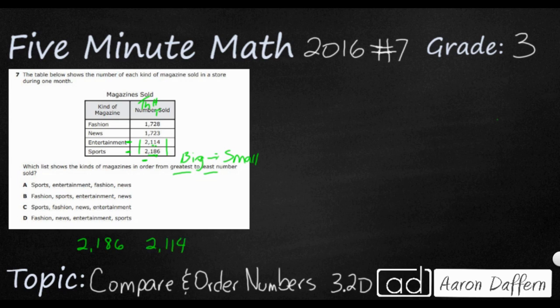Now let's go back to the beginning. We're still looking for the biggest number, but we'll pick up the other two: fashion and news. They're both 1,000, both 700, and both in the 20s. So we have to go to the fourth digit to break the tie—the ones place. Fashion has an 8, which is slightly larger. Remember, big to small. So we have 1,728, and then finally 1,723.